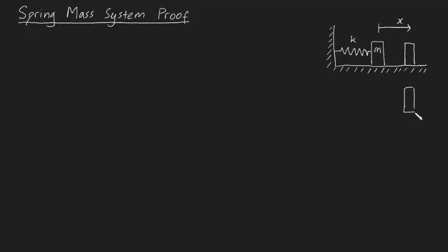This is our free body diagram. Now of course there will be vertical forces on this thing — we'll have our force due to gravity and our normal force. But what's most interesting is we will have a spring force acting on this block towards the left. Notice if the block is over here at some time t, that means the spring has been stretched, which means the spring force must be applying a force back towards the left. And we know from Hooke's law the magnitude of this force is kx.